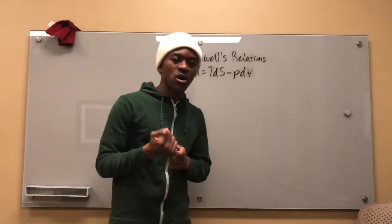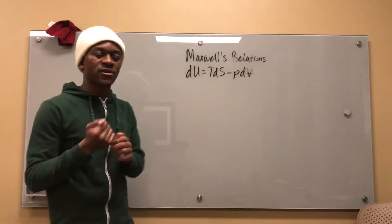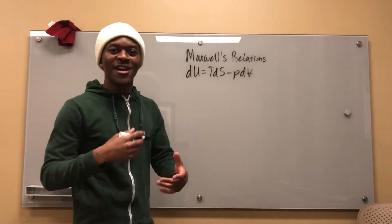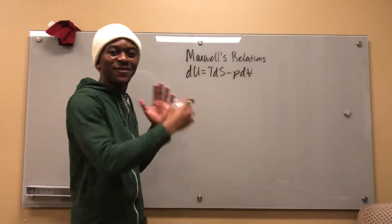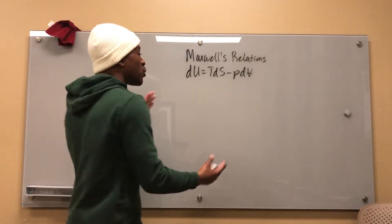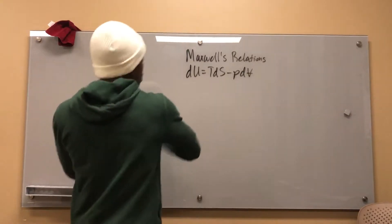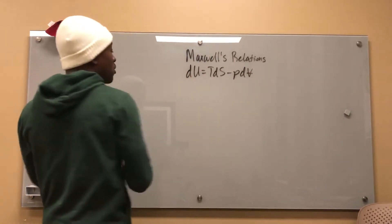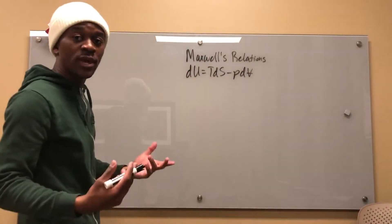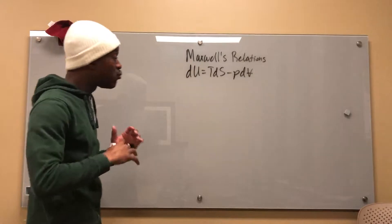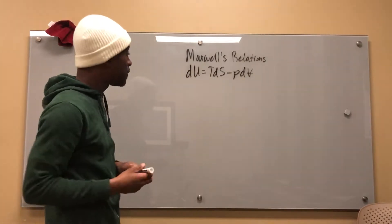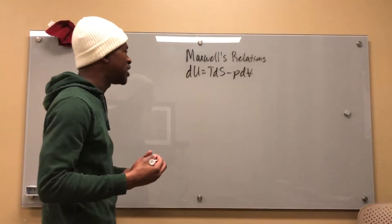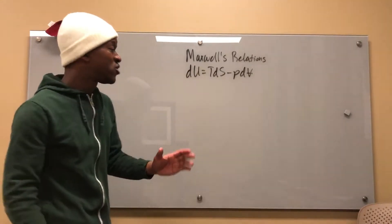Maxwell's relations were really hard for me to grasp at first, so I came up with what I call a 'flip-flop method.' Just remember this motion — it makes it really easy to figure out Maxwell's relations.